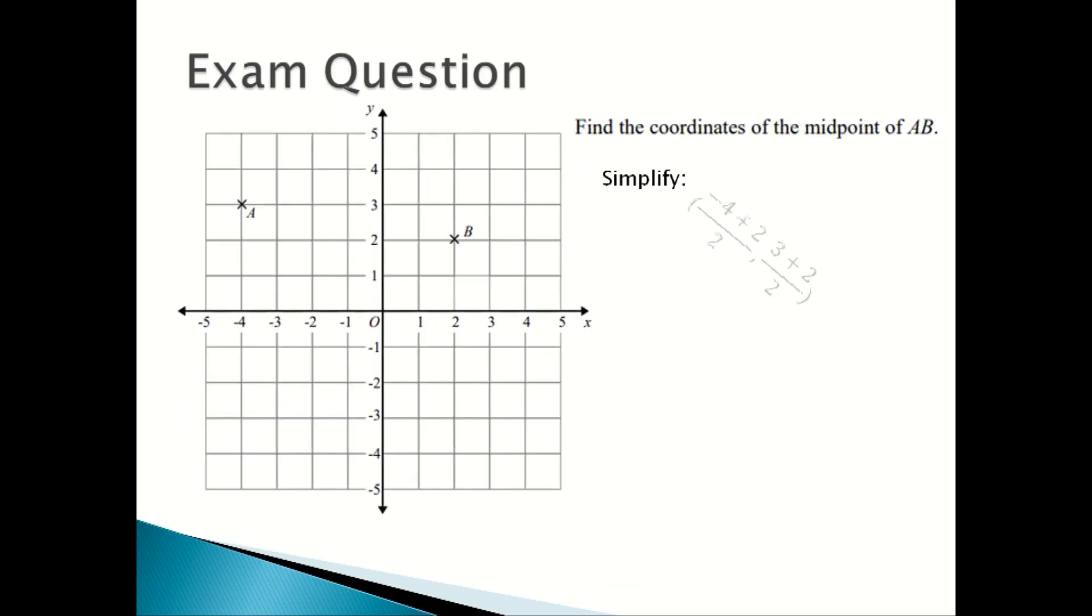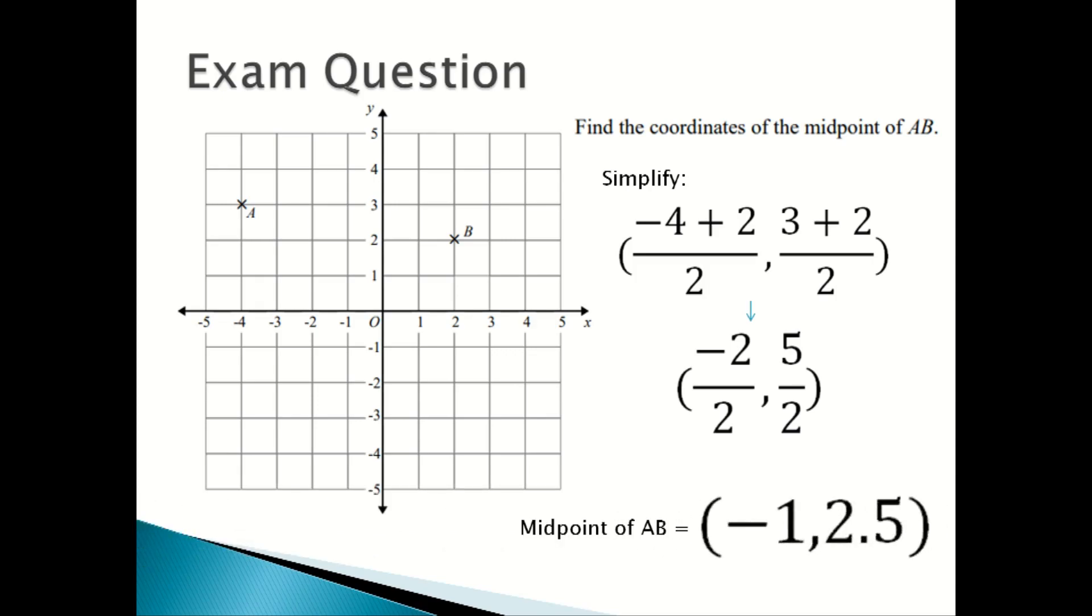You simplify (-4 + 2)/2 and (3 + 2)/2 to become -2/2 and 5/2. So the midpoint of AB is (-1, 0.5).